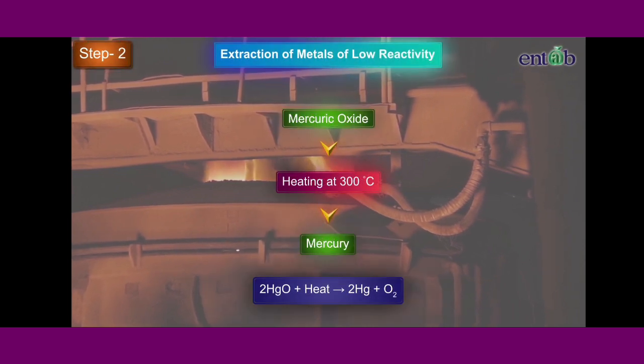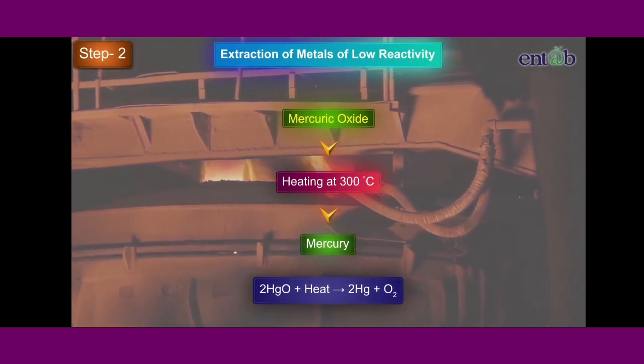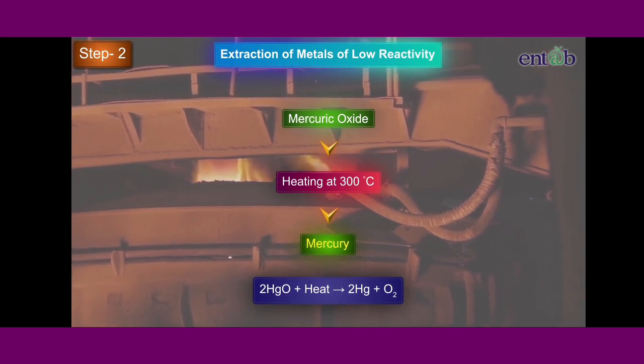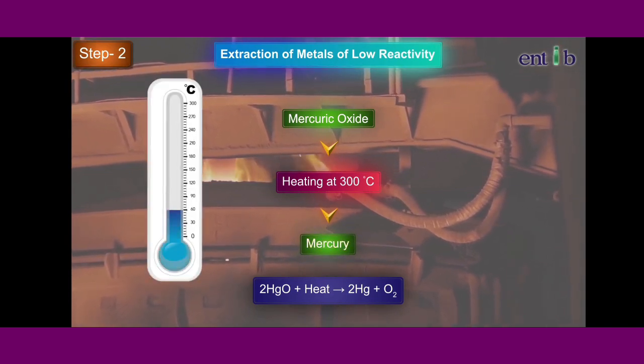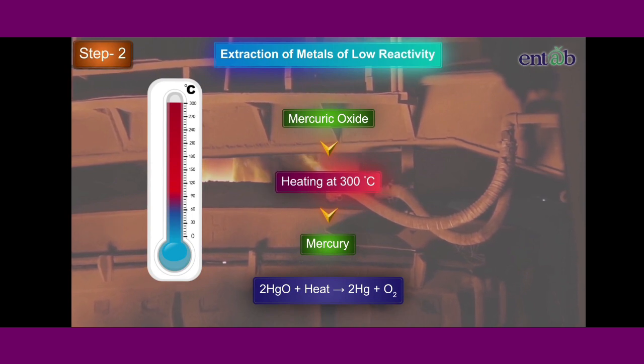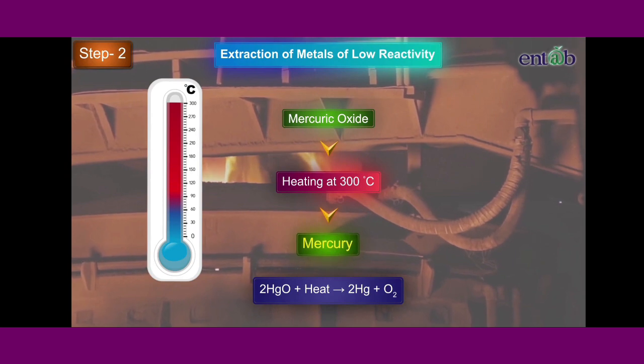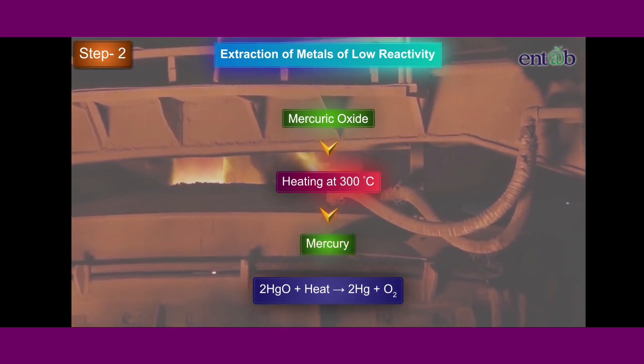In step number two, the mercury oxide is reduced to mercury by strongly heating to a temperature of 300 degrees Celsius. When it decomposes or reduces to form mercury metal.